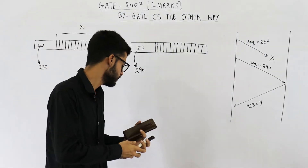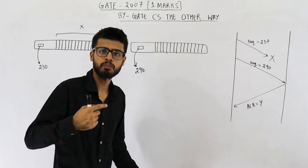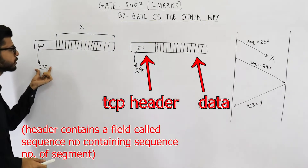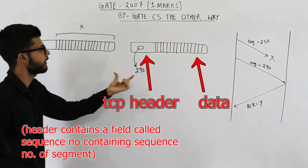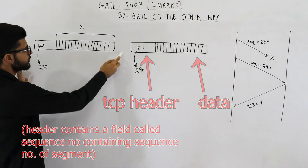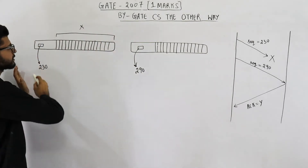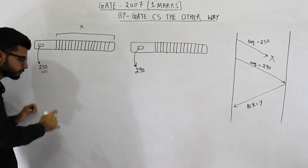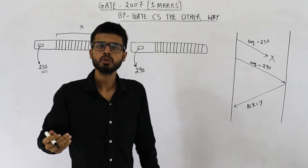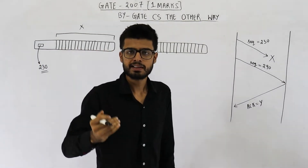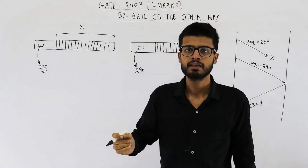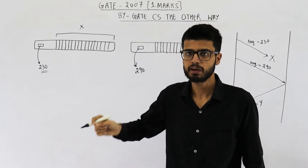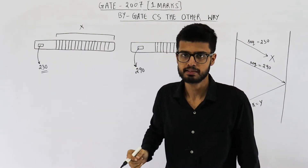The sender is sending two segments back to back with sequence numbers 230 and 290. So the sequence number of the entire first segment is 230. You need to know that the sequence number of a segment is equal to the sequence number of the first byte present in that segment.